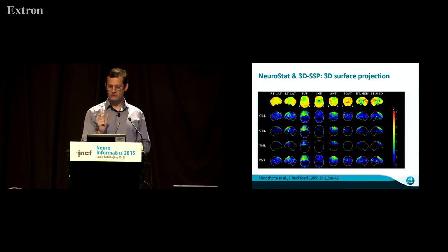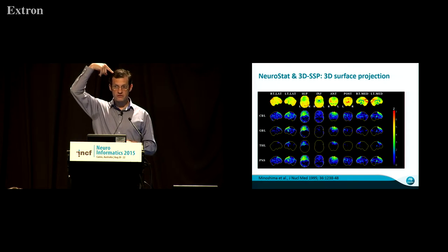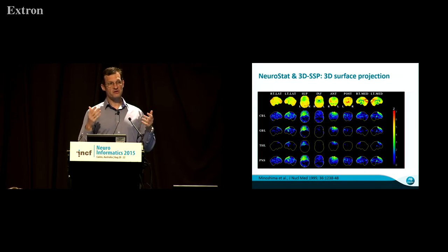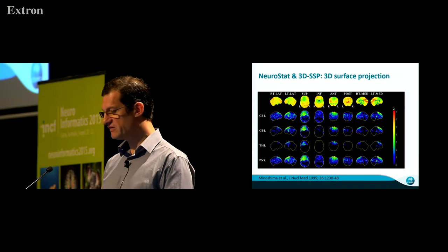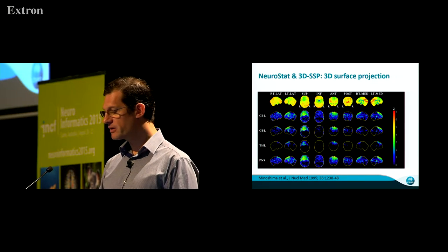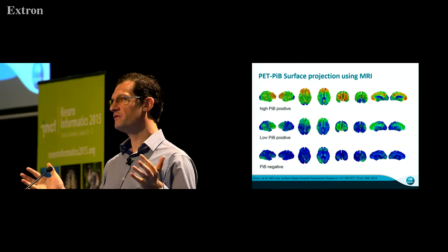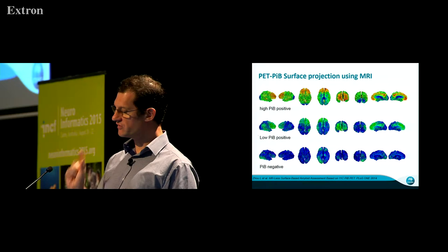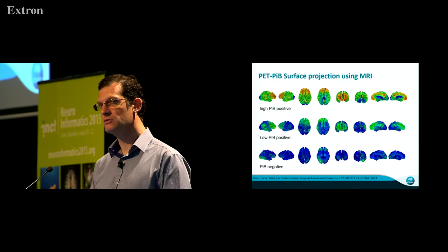Neurostat was developed for FDG, a glucose marker. It works well because FDG signal is mostly in the gray matter with almost none in white matter, so sampling perpendicular to the surface and taking the maximum allows projection onto the brain surface. Using a database of normal subjects, one can compute a z-score. We adapted this approach for amyloid PET: taking the white matter surface from MRI, for each point averaging the adjacent gray matter signal, and painting the surface with a color code representing either the SUVR value or the z-score.